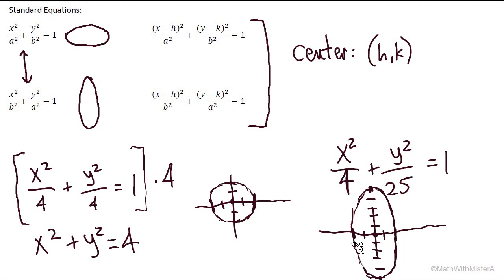So we'll be paying attention to the denominators being different. That's how we'll know we have an ellipse. If the denominators turn out to be the same, we can actually simplify it this way to look exactly like our form of an equation for a circle.